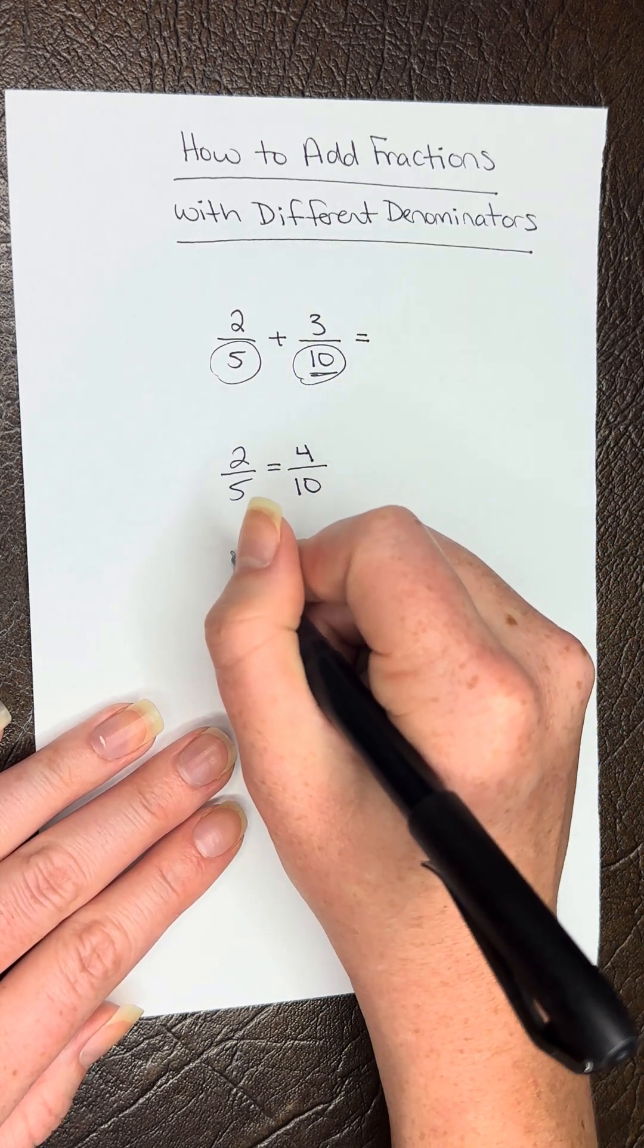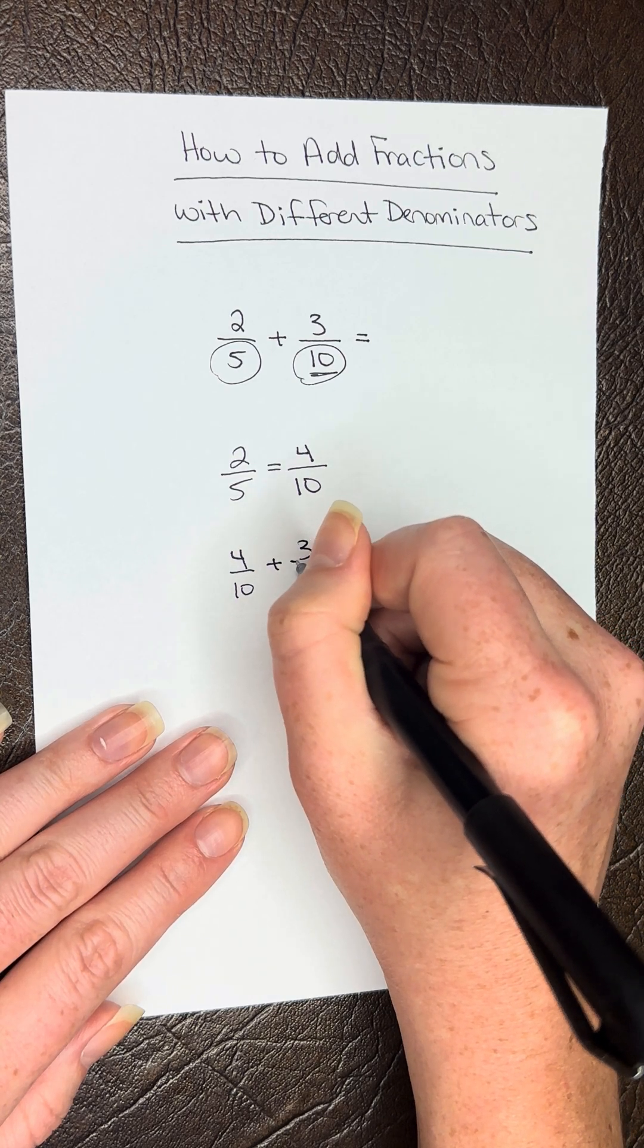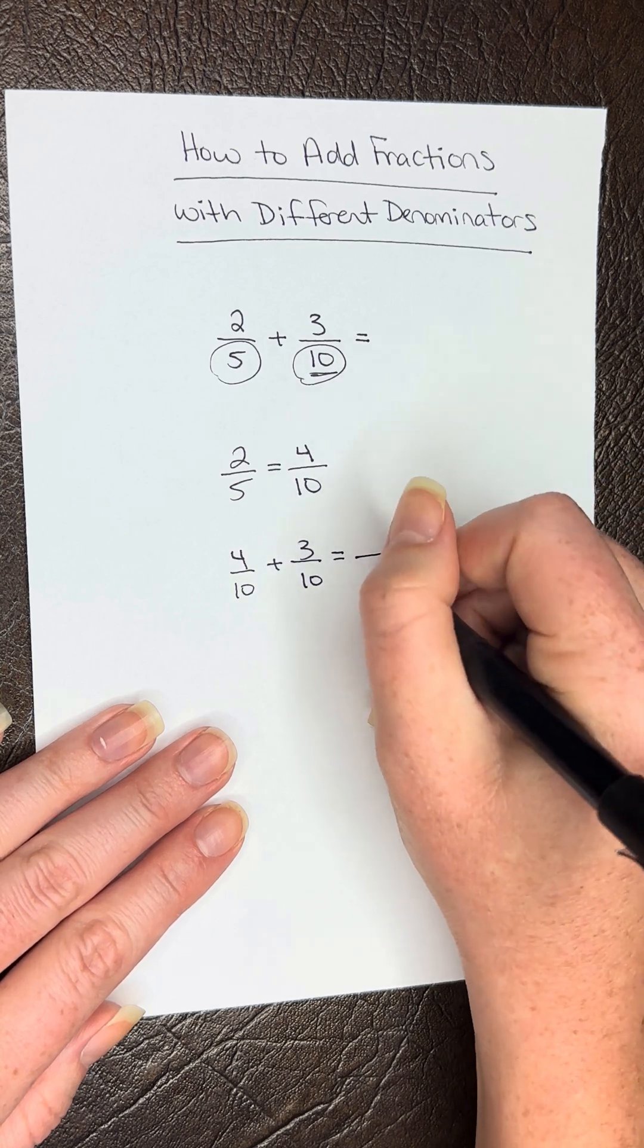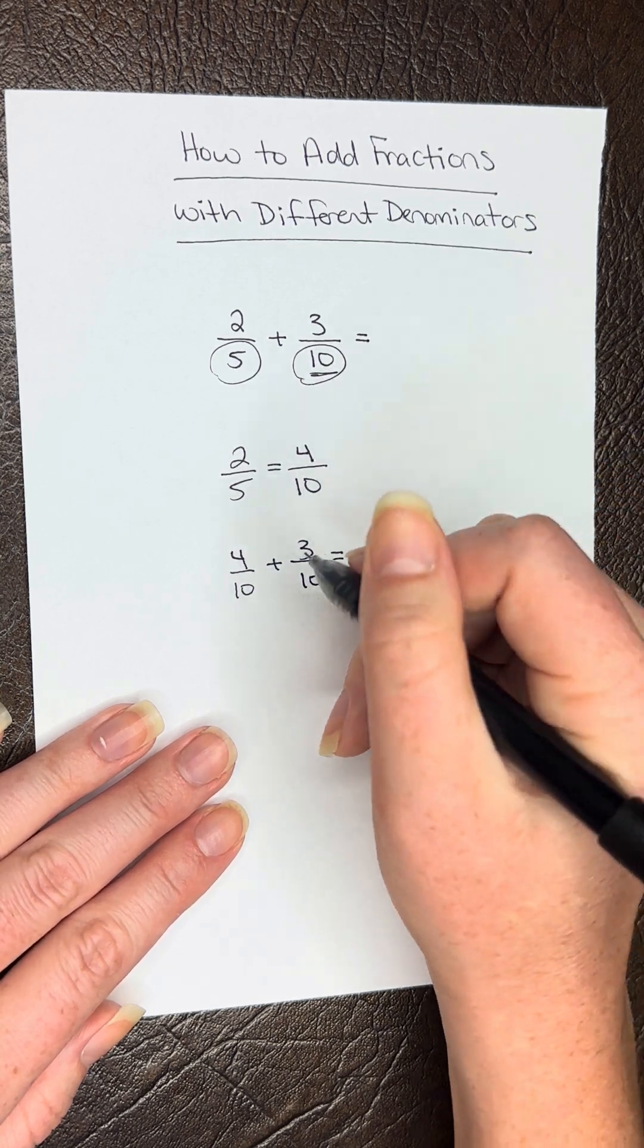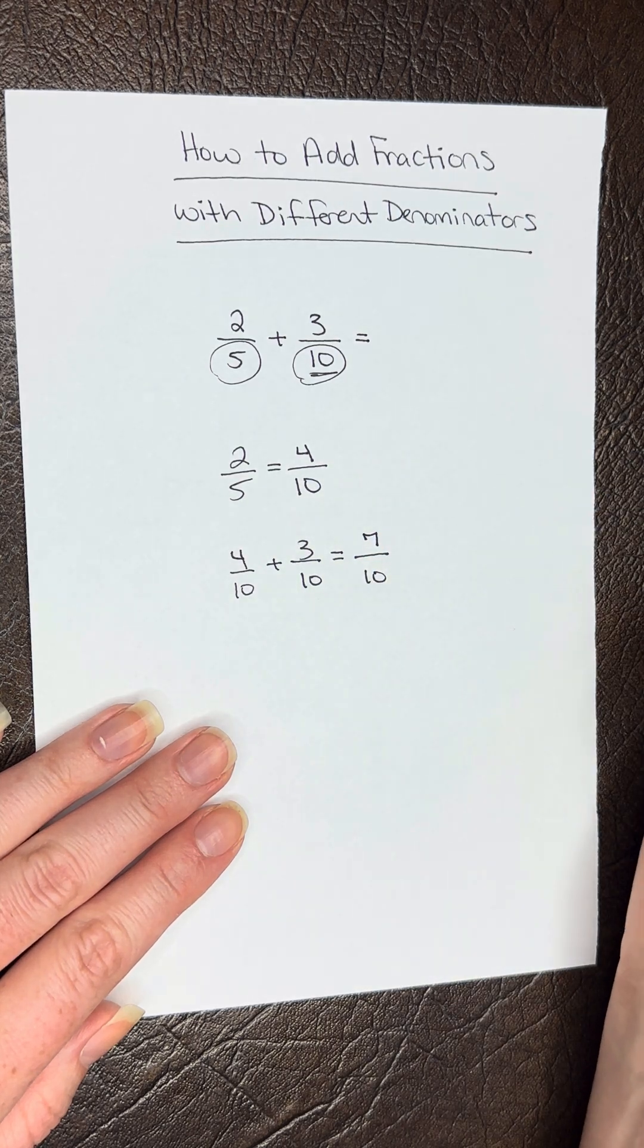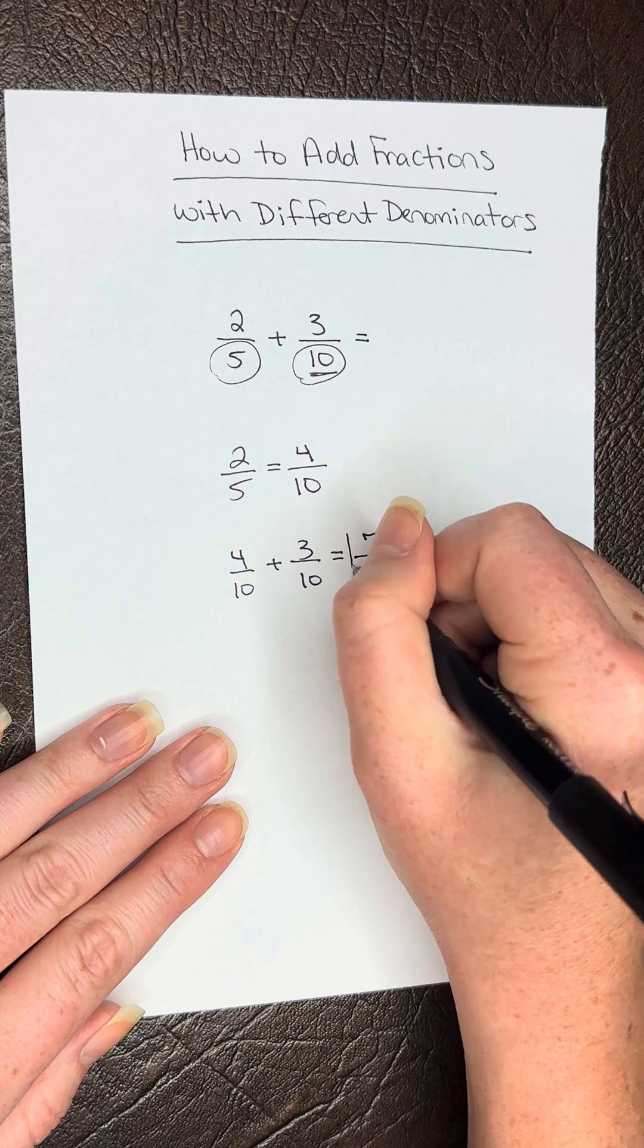Now let's rewrite. We have 4/10 plus 3/10. Now that our denominators are the same, we can carry over the 10 and add the numerators. 4 plus 3 gives us 7. We can't simplify this further, so our final answer is 7/10.